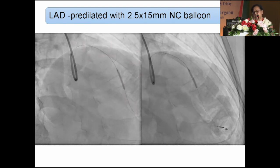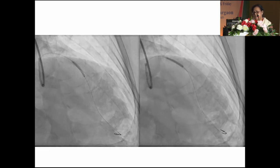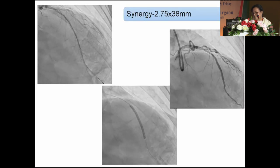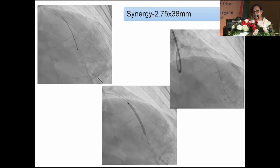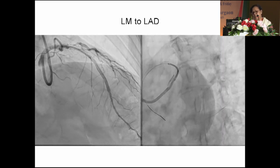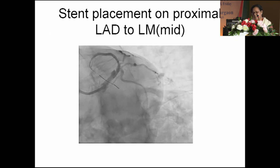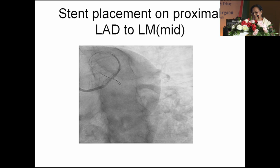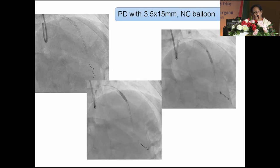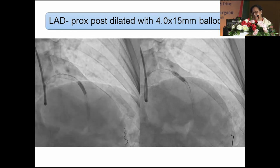We started PTCA from distal LAD to the left circumflex artery. We took a 2.5×15 NC balloon and dilated sequentially. We then placed a stent for the distal segment — 2.75×38 mm — and inflated that part. A second stent overlapping the first was placed from mid-LAD to distal left circumflex, up to mid-left circumflex. The stent was 4×38 mm. We performed in-stent dilation with a 3.5 mm balloon on the overlapping segment, and then a 4.15 mm balloon for in-stent dilation of the proximal LAD and left circumflex.